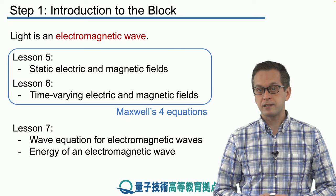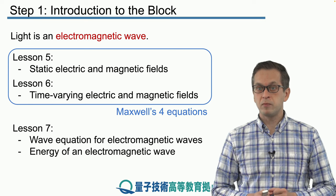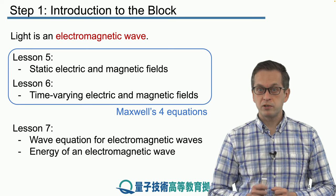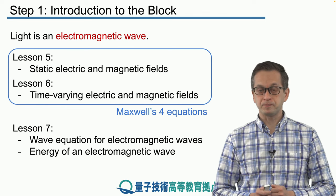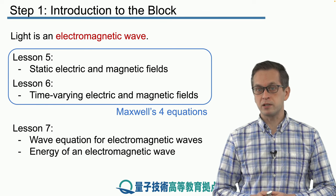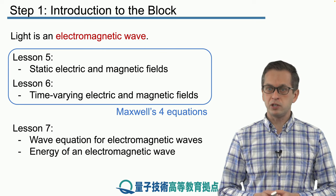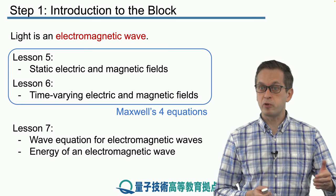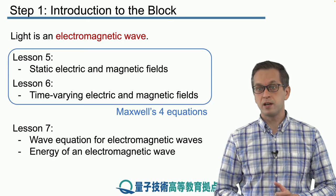In the last lesson of this series — lesson seven — we will take these Maxwell's laws, put them together, and demonstrate that light is an electromagnetic wave. We will derive the wave equation for light and then consider some of the properties of such an electromagnetic wave, for example how energy propagates in this electromagnetic wave, and we will be talking about things like Poynting vectors.